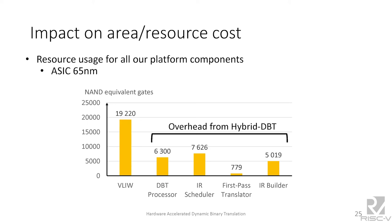Regarding area overhead: we added three accelerators and a dedicated processor to manage the DBT process. We measured how much silicon this represents and found that the three accelerators and DBT processor have the same cost as the VLIW with four issue slots. This is not negligible, but we think that sharing this overhead across different VLIWs — using one DBT platform for multiple VLIWs — can reduce the overhead.